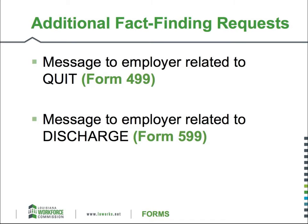You may also receive additional fact-finding requests. Form 499 and Form 599 are separation information requests. Often during the adjudication of a claim, additional information is needed in order to make a just decision. For the sake of thoroughness, please respond to all requests for information.